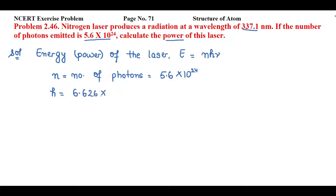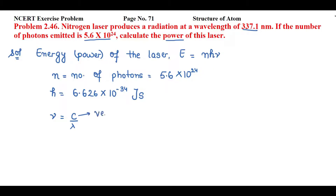h is Planck's constant with value 6.626 into 10 raised to power minus 34 joule second. Now ν is frequency. We don't have frequency in the question, so we'll convert using the relation: frequency ν = c divided by λ, where c is the velocity of light and λ is the wavelength of light.